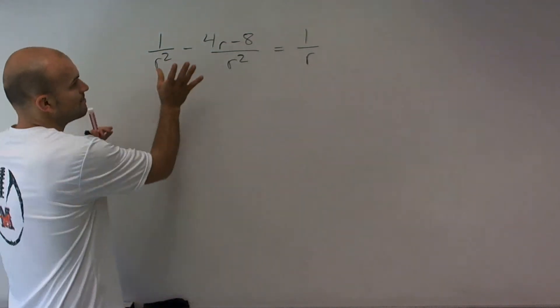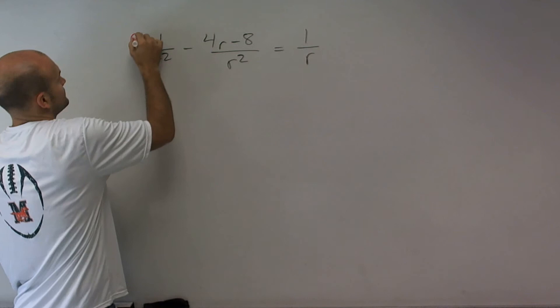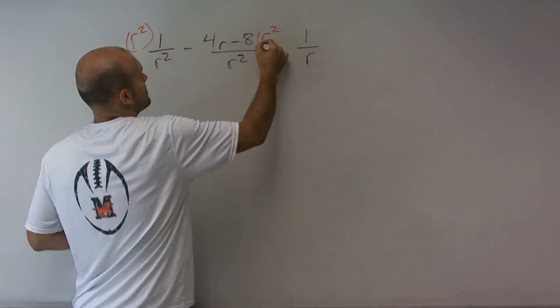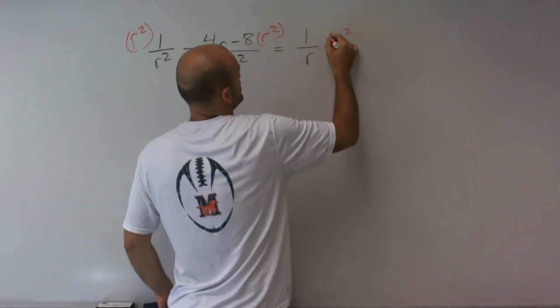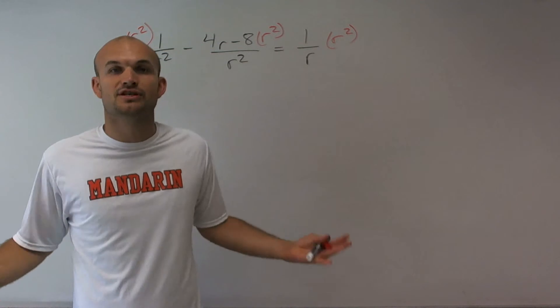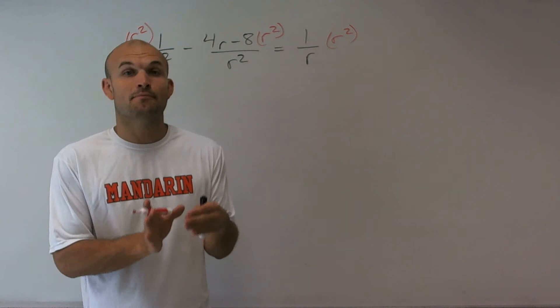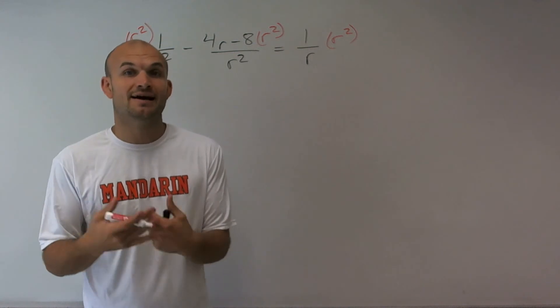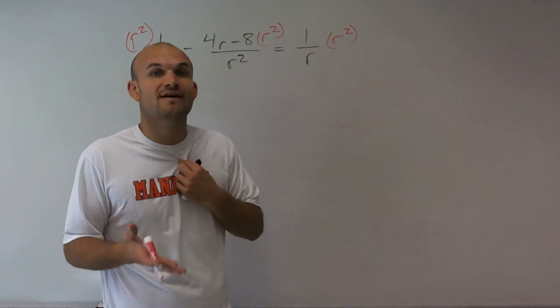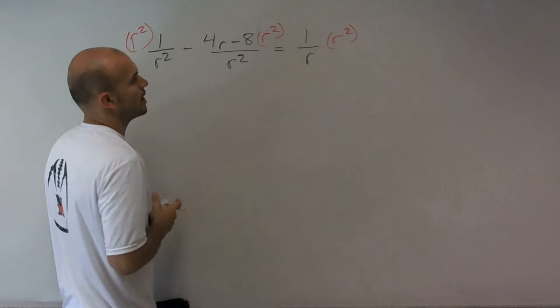So I'm going to multiply every single one of my terms by r squared. The reason why I have to multiply everything times r squared is I have to produce equivalent equations. If I say x equals 5 and multiply by 2 on both sides, then I'd have 2x equals 10, which still has x equals 5, so I have equivalent equations. It's really important to make sure you multiply each one of my terms by r squared.